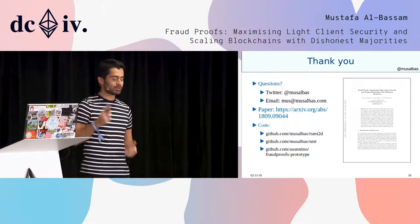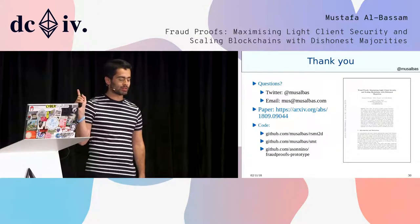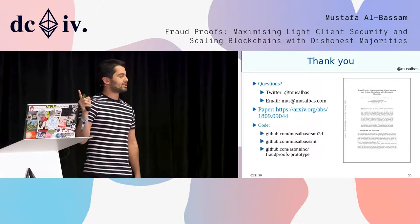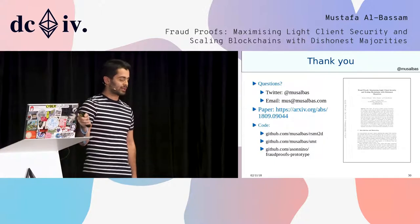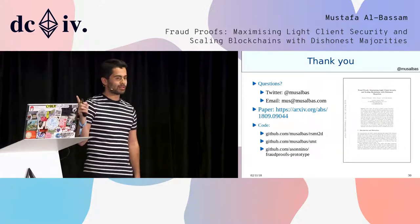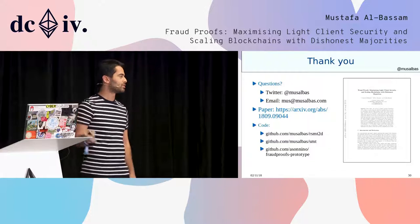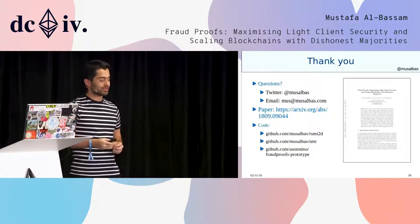If you want to look at the paper, the link is on the screen. Code is on GitHub. We have the code for the data availability code using erasure coding, a sparse Merkle tree implementation in Go, and a prototype for the fraud proofs itself.